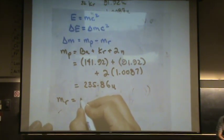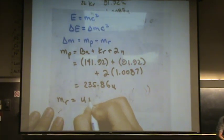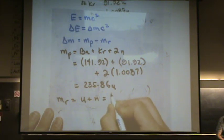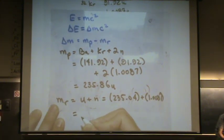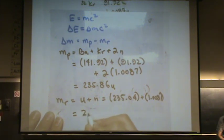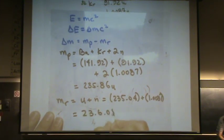The reactants, we have a uranium and a neutron. So the uranium is 235.04, and the neutron is 1.0087. That turns out to be, for the reactants, 236.05 u.